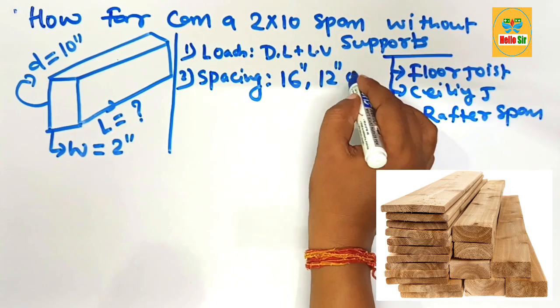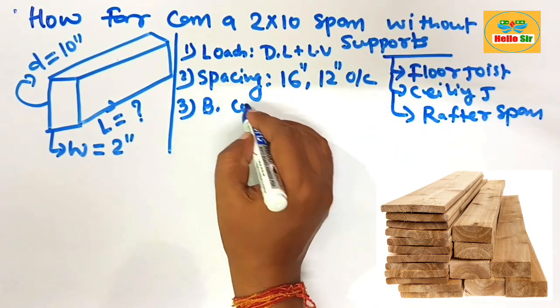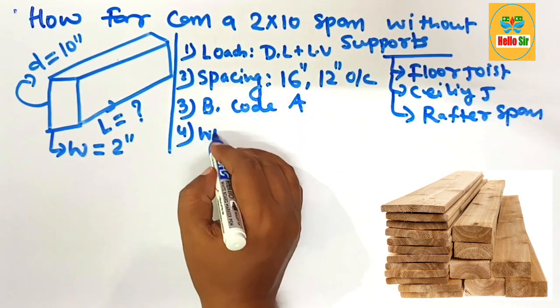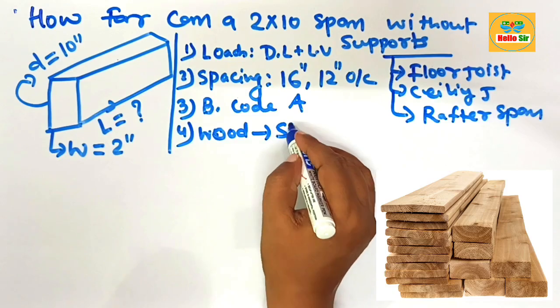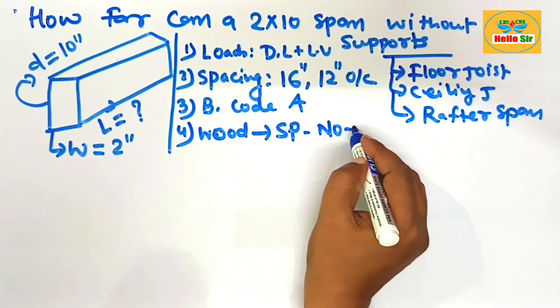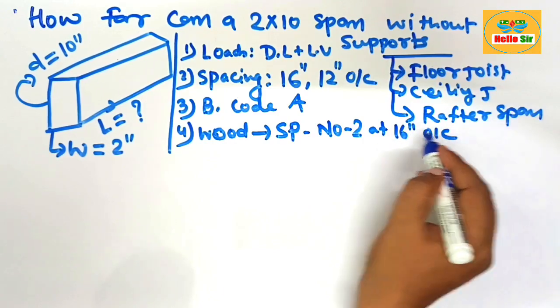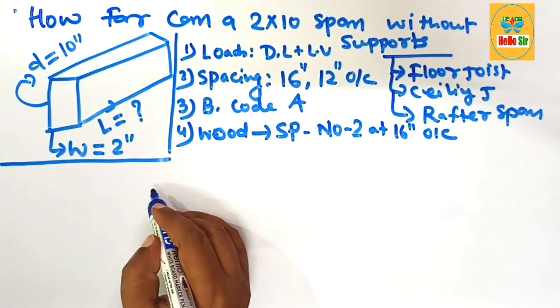And the third factor, that is building code in your area - what will be the building code in your area? And the wood species - what type of wood? Here we take the Southern Pine number 2 grade of species at 16 inches o.c. These are the major factors that decide the span length for a 2 by 10 dimensional lumber.